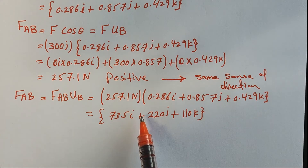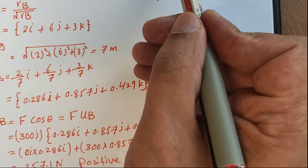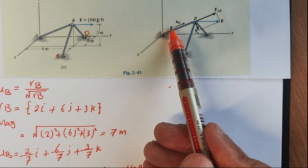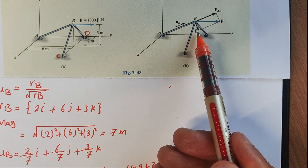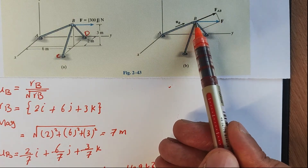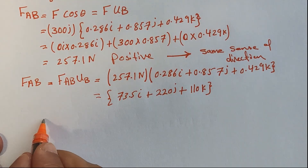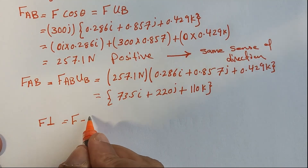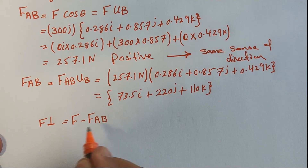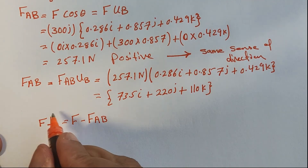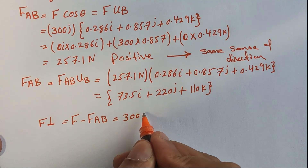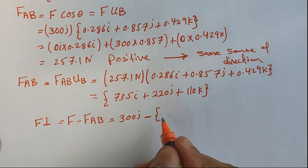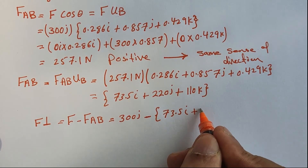To find the perpendicular force component: the parallel (collinear) force has been found; now we need the perpendicular component. There are several ways, but the easiest is F_perp = F - F_AB, which equals 300J minus (73.5i + 220j + 110k).